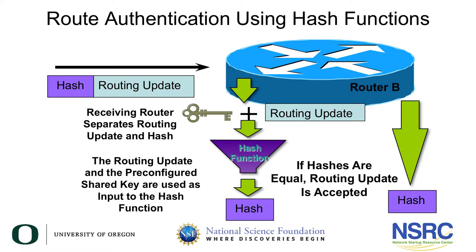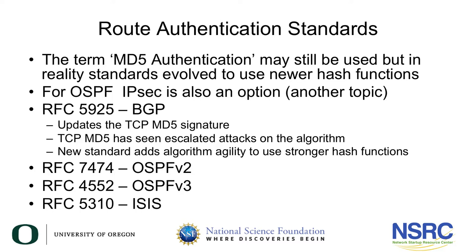The receiving router takes the routing update and the received hash, storing the hash in memory. In parallel, it takes its own configured shared secret and the routing update, runs them through the same hash function (MD5), and generates its own 128-bit hash. The computed hash is then compared to the one received from the peer router. If they match, the routing update is accepted; if they don't match, the routing update is rejected.